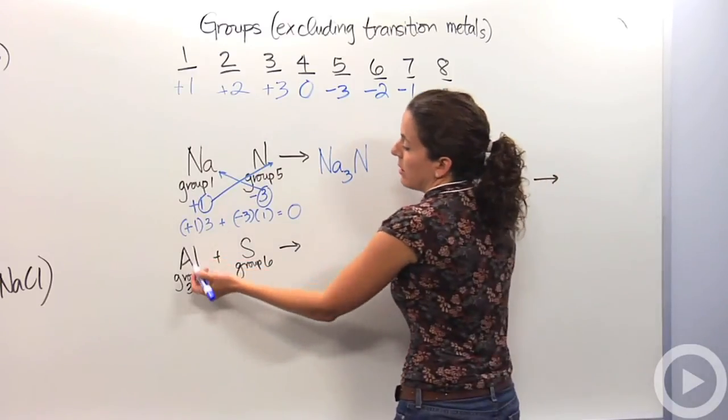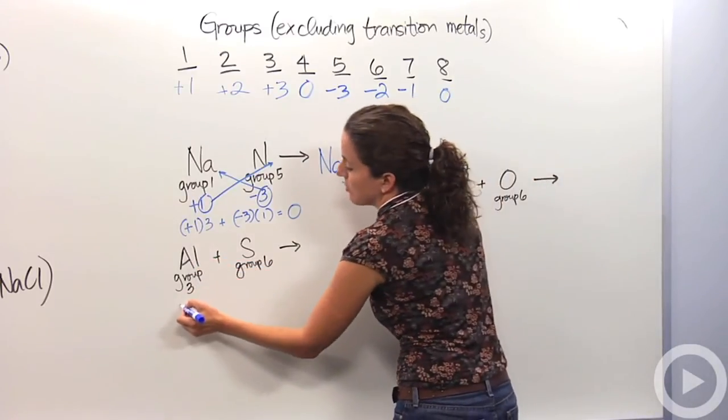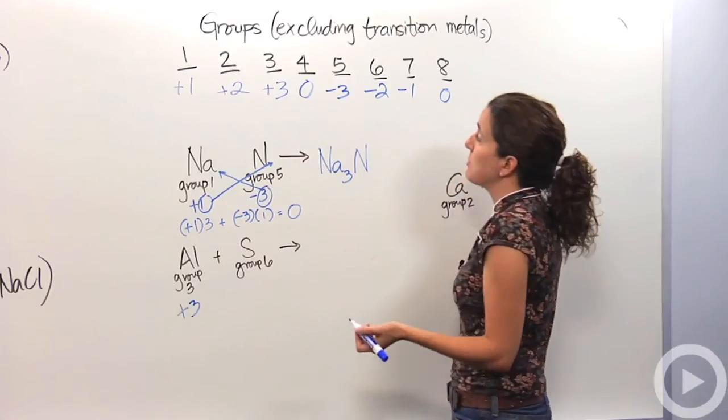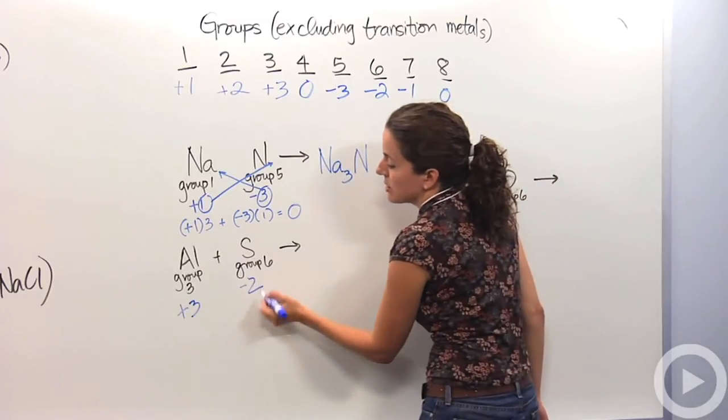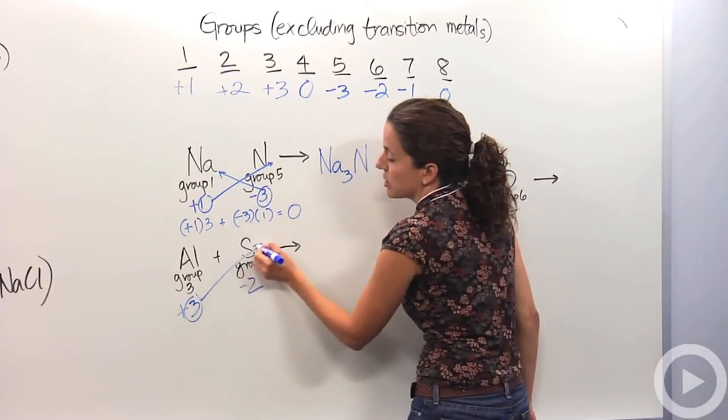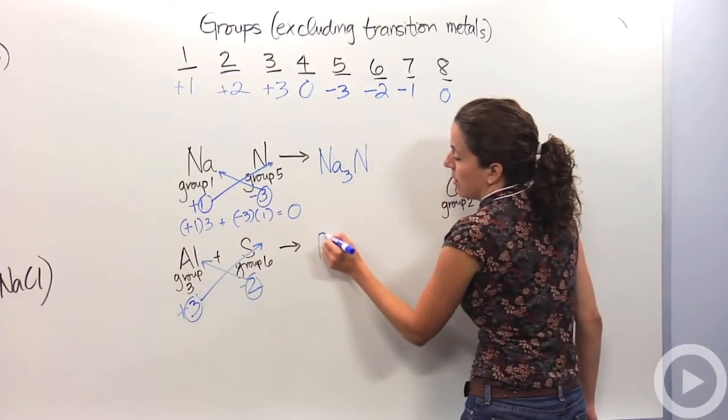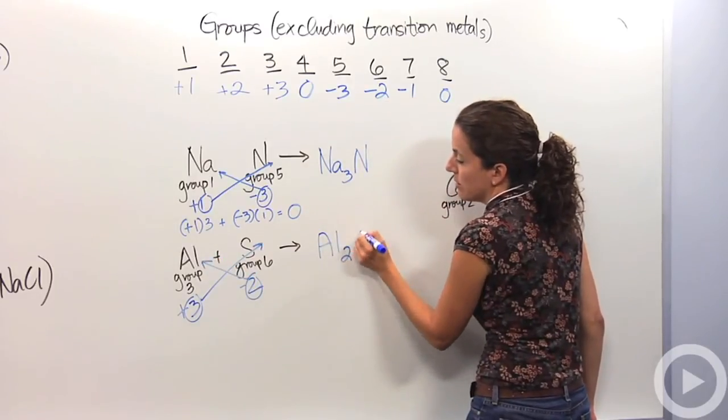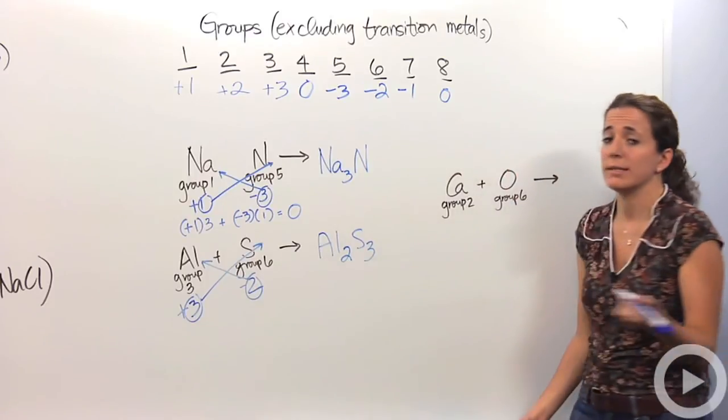So let's do aluminum. Aluminum's in group three, which means the plus three charge. Sulfur's in group six, which means the minus two charge. We're doing our trick, we're going to just exchange those numbers, making it Al2S3. Easy enough.